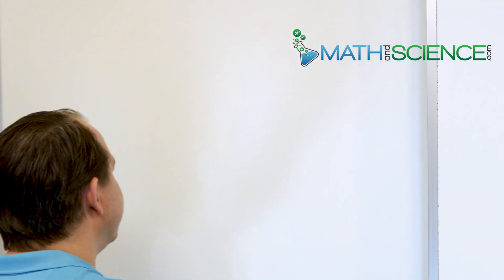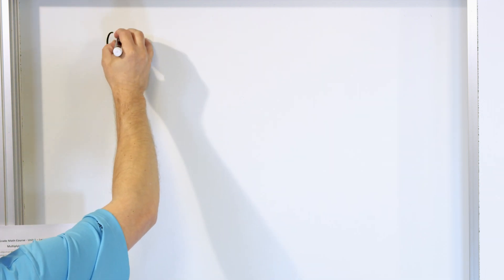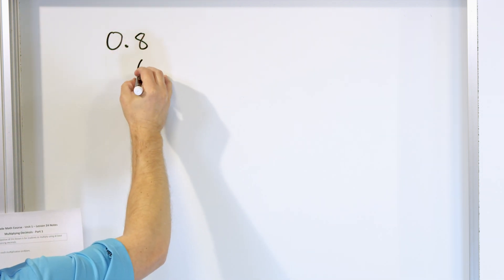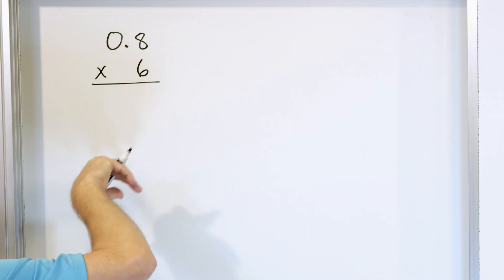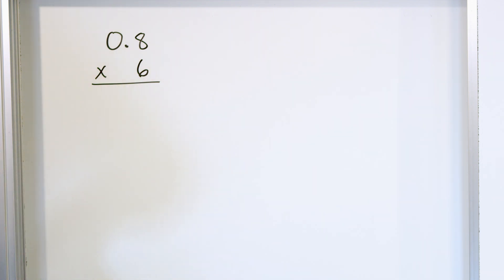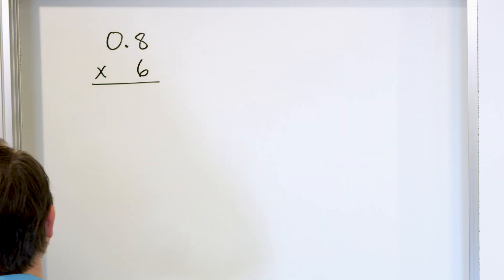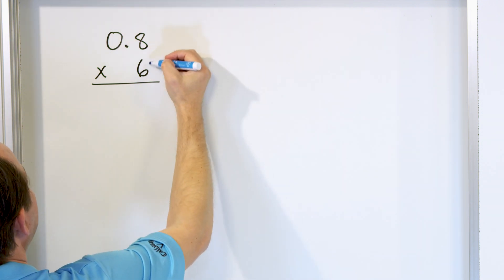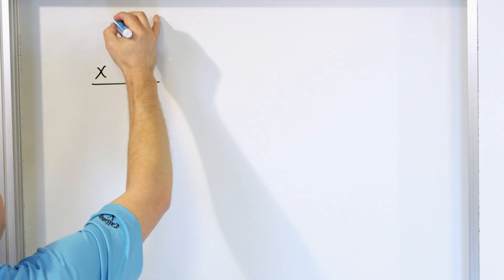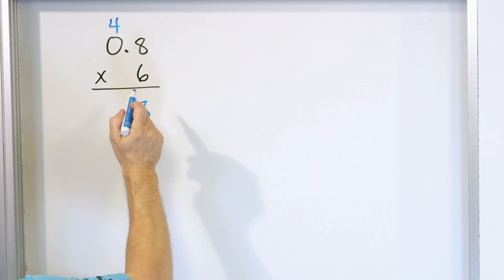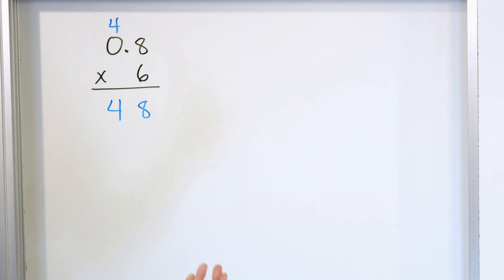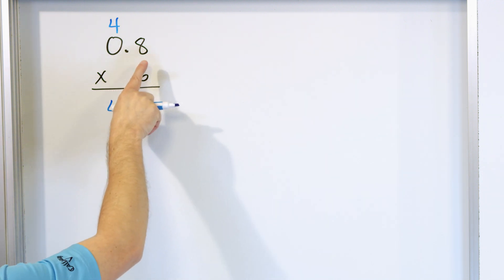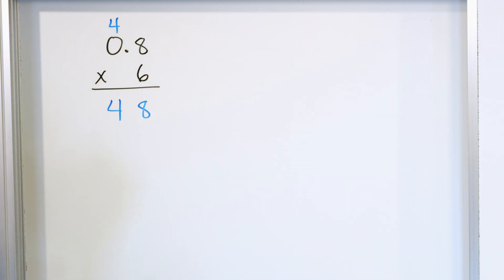So long story short, it's very, very close to what you already know how to do. Let's take a look at the simple problem: 0.8 multiplied by 6. I have a 0, an 8, and a 6, and I push everything to the right as usual. I'm going to ignore the decimal point completely until the final answer — I'm going to pretend it's not there. Starting on the right: 8 times 6 is 48, so I write the 8 and carry the 4, just like usual. 0 times 6 is 0, plus 4 gives me 4.